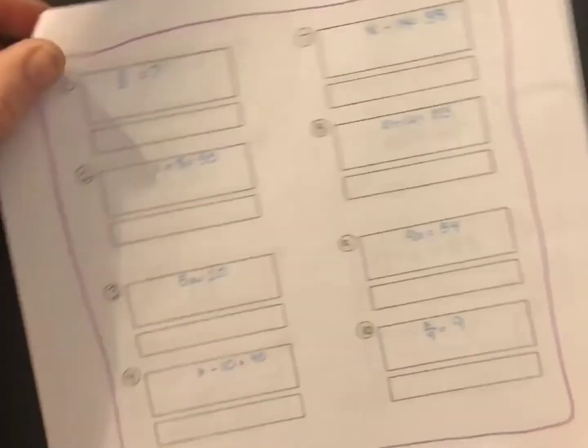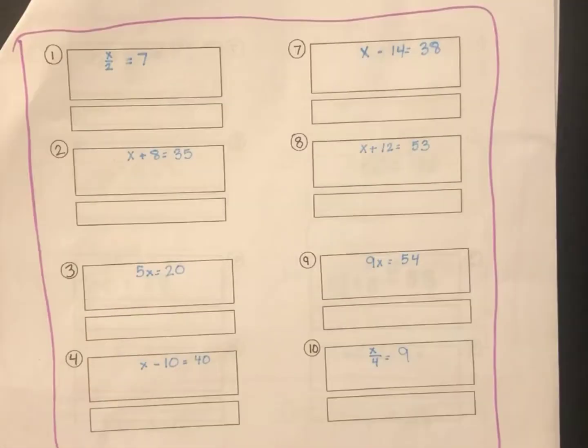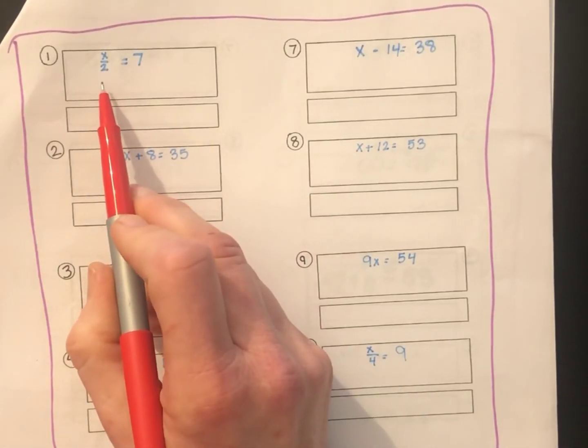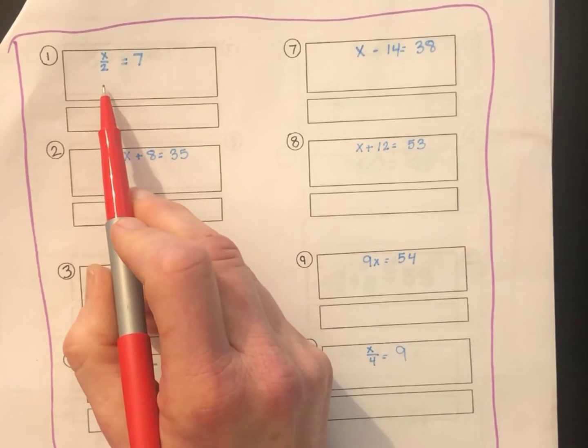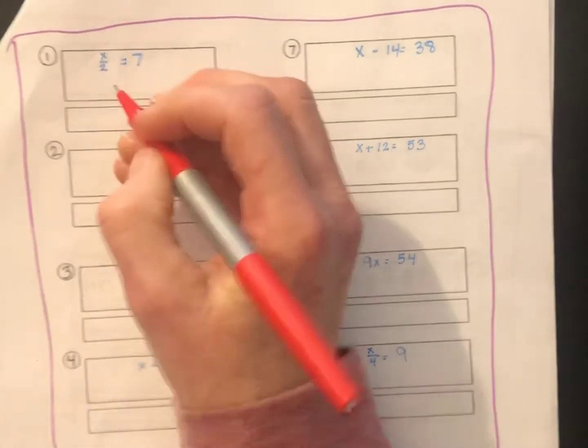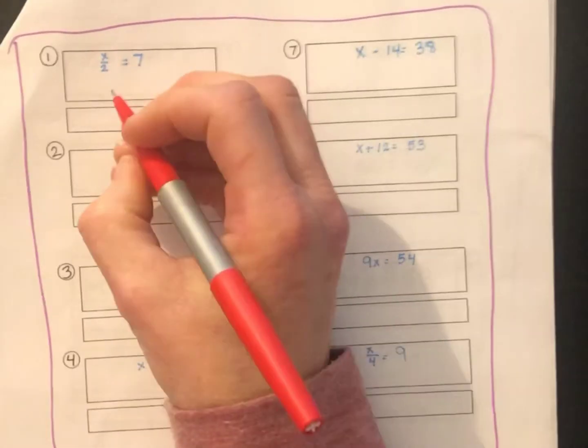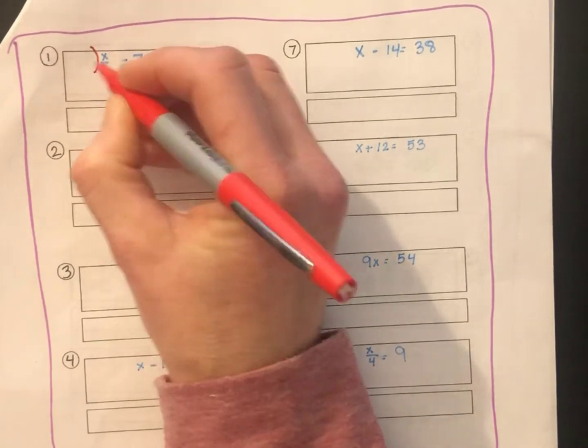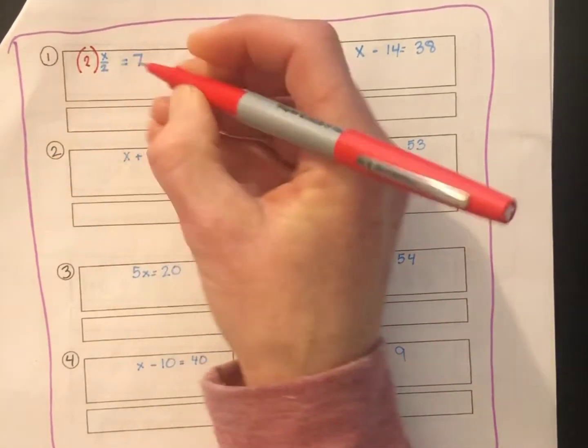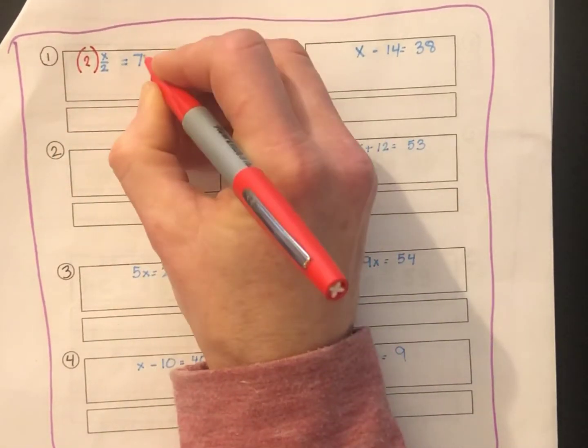On the second page, you'll see not only addition and subtraction, but also multiplication and division with the x variable. Let's go ahead and look at the first one. You've got x divided by 2 equals 7. Remember, our goal is to isolate the x. And by doing the inverse operation, we can get the x by itself. The opposite of division is multiplication. x divided by 2 times 2 would get rid of the 2.